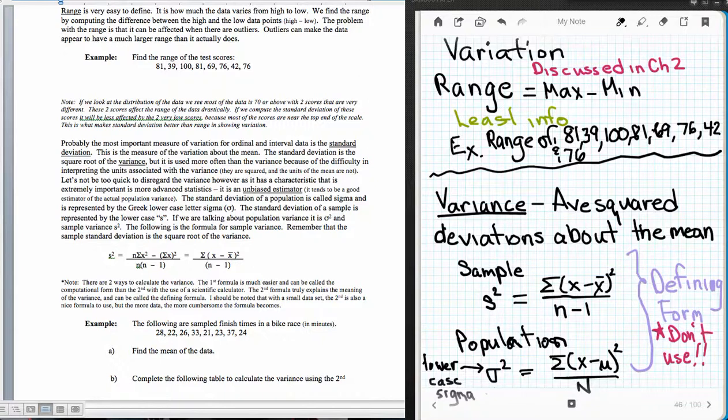Okay, the next thing we're talking about is variation. So we are going to have two major measures of variation and a third that is related to one of those two.